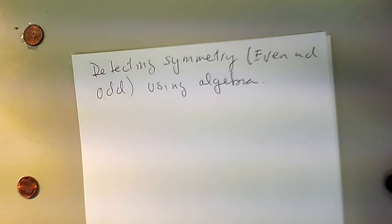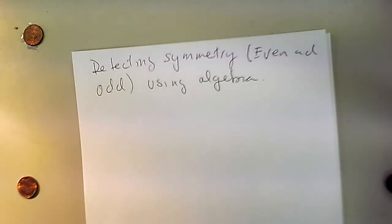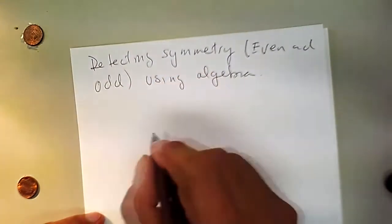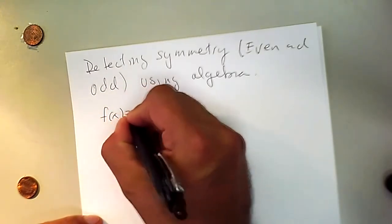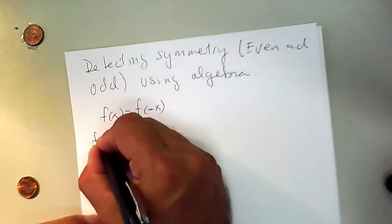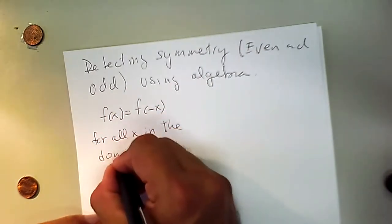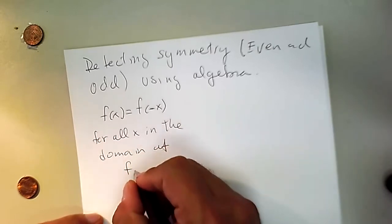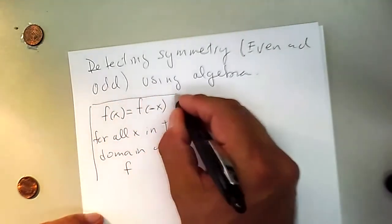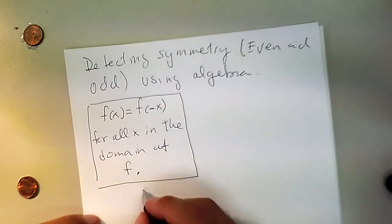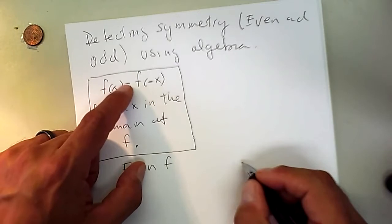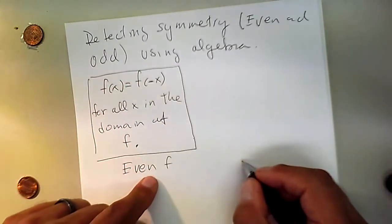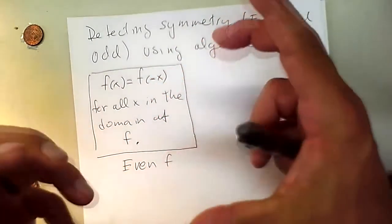If you look at the picture, it doesn't take too much to figure out whether something is even or odd. But oftentimes we're not going to be given a picture — we're going to be given a function. Here's the rule: f(x) must equal f(−x) for all x in the domain of f. If this happens, then we have an even function. That is the requirement for an even function.